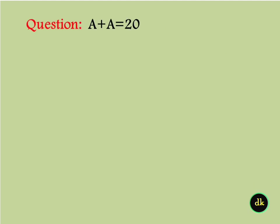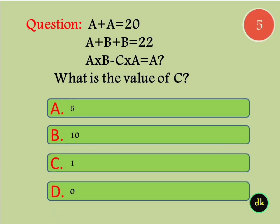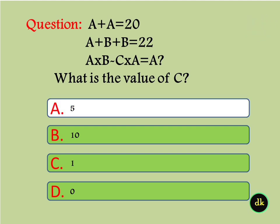A plus A is equal to 20. A plus B plus B is equal to 22. Then A cross B minus C cross A is equal to A. What is the value of C? The answer is 5.